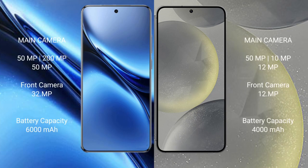Vivo X200 Pro features a triple rear camera setup: 50MP plus 200MP plus 50MP, and a 32MP front camera. Samsung Galaxy S24 features a triple rear camera setup: 50MP plus 10MP plus 12MP, and a 12MP front camera.